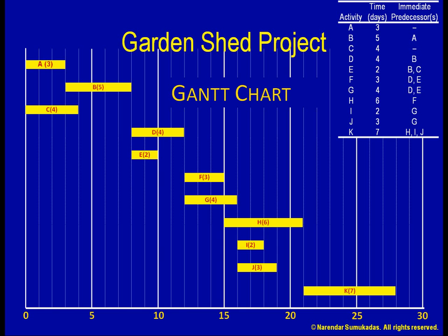For example, activities F and G can run in parallel as far as the precedence requirements are concerned. However, suppose both of these activities require a particular tool and I own only one such tool. Unless I can rent another tool, the activities will have to become sequential. Likewise, even if I have enough tools, if both activities involve the same nook in the shed, I can't possibly fit two individuals in that space at the same time.